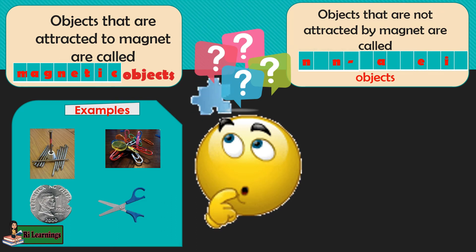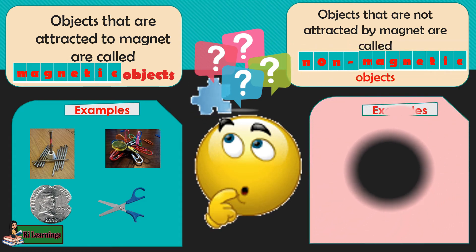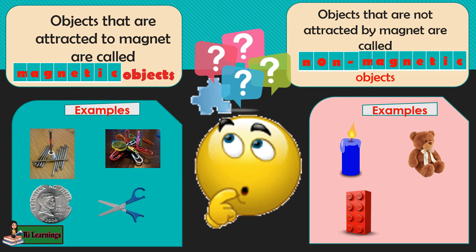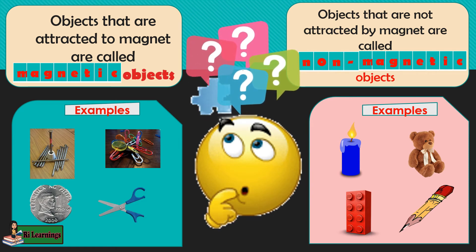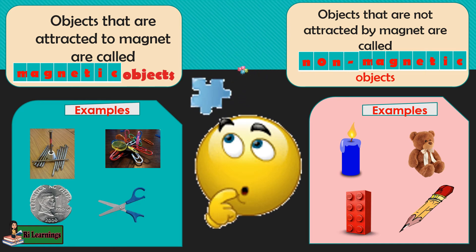Objects that are not attracted by magnets are called, what do you think? Very good. They are called non-magnetic objects. Examples of non-magnetic objects are candle, stuffed toy, brick, and pencil. Materials that are made of wood, cloth, and plastic are non-magnetic objects.